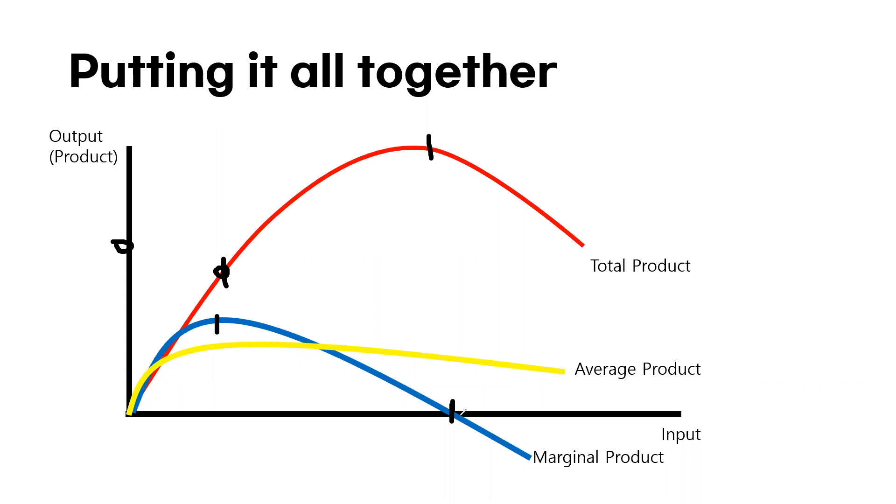Now, finally, as the marginal product breaks through the x-axis and becomes a negative number, you can see that the total product is also declining at this amount, which corresponds to this amount.